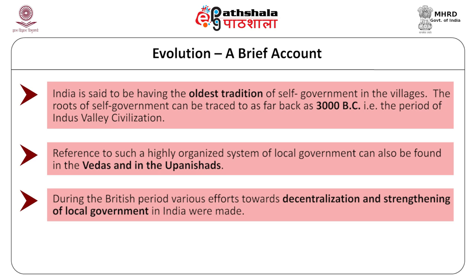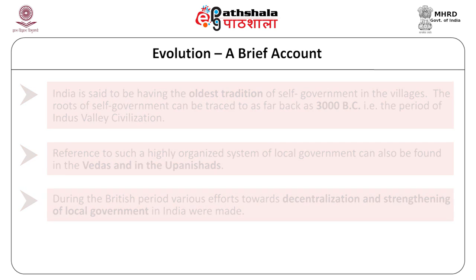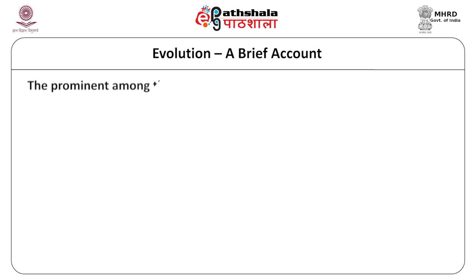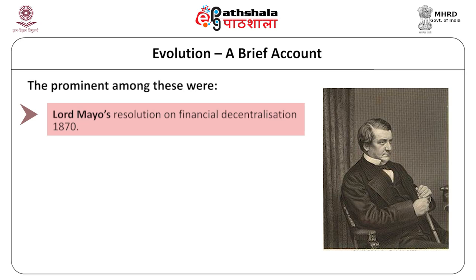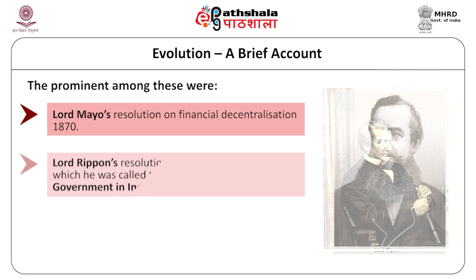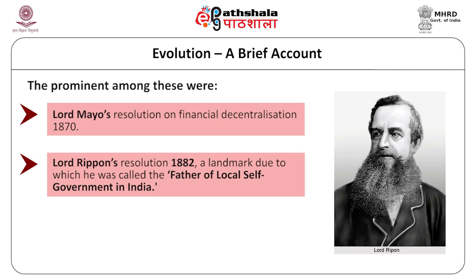During the British period, various efforts were made to provide for local bodies. There was financial decentralization, prominent among which is Lord Muir's resolution on financial decentralization in 1870. In 1882, Lord Ripon proposed local self-government in India, and he is known as the father of local self-government in India. His resolution is known as the Magna Carta of local government in India.